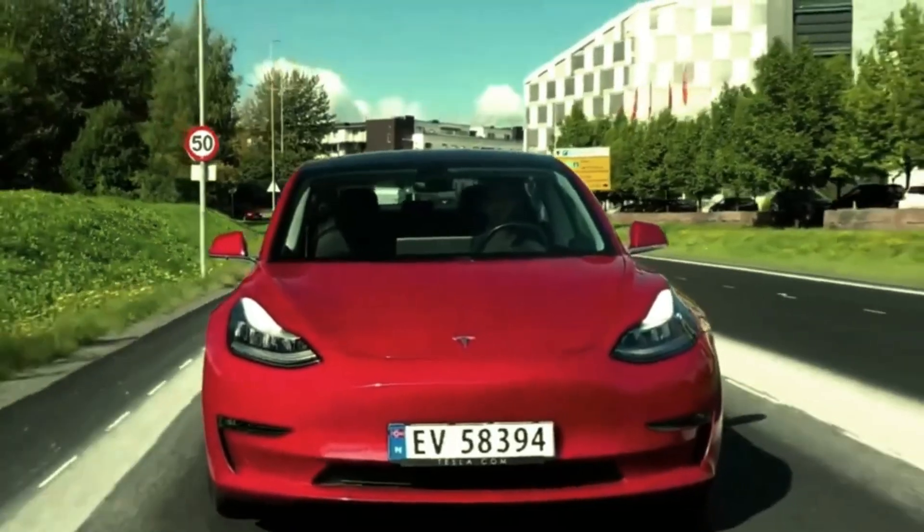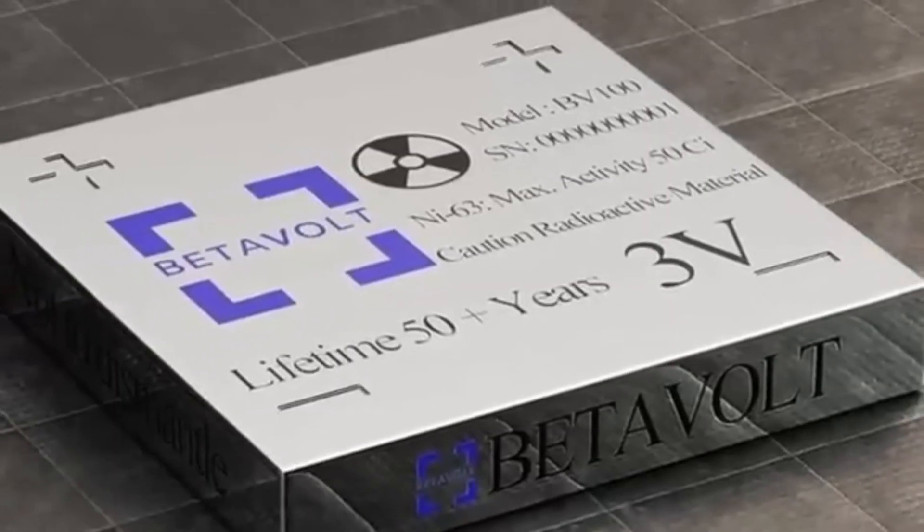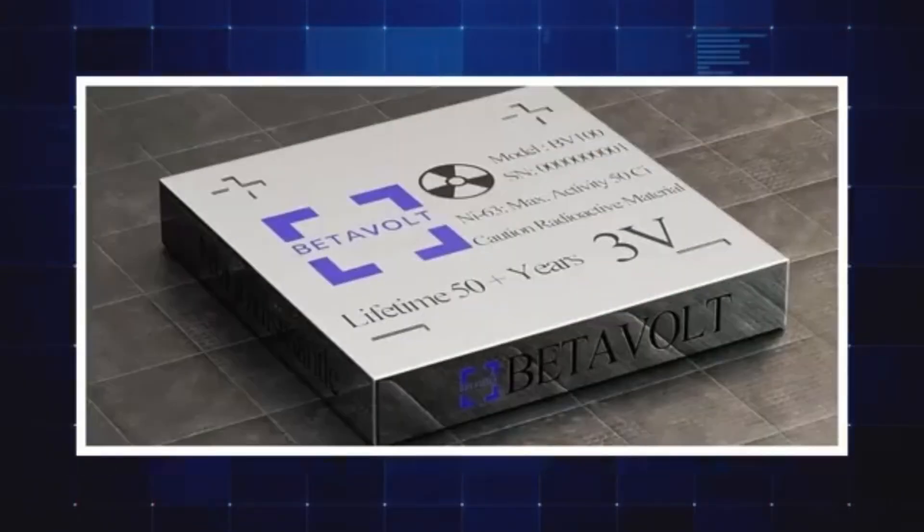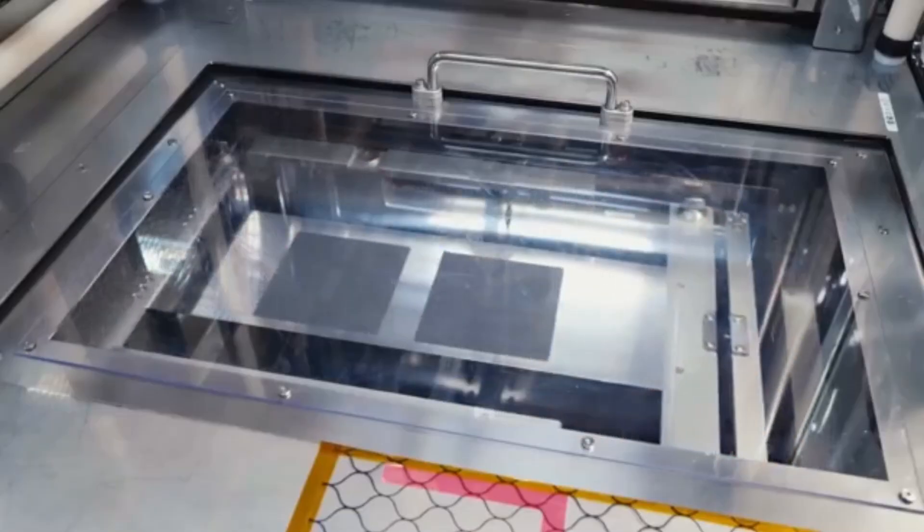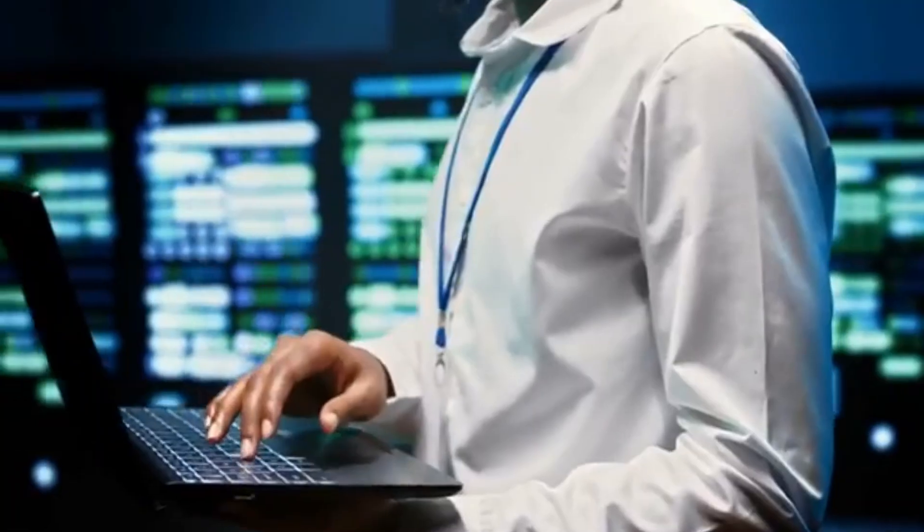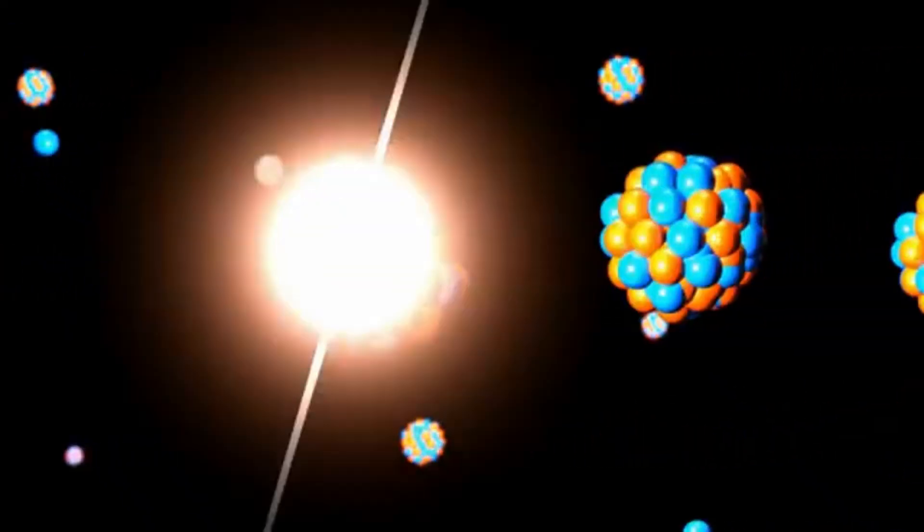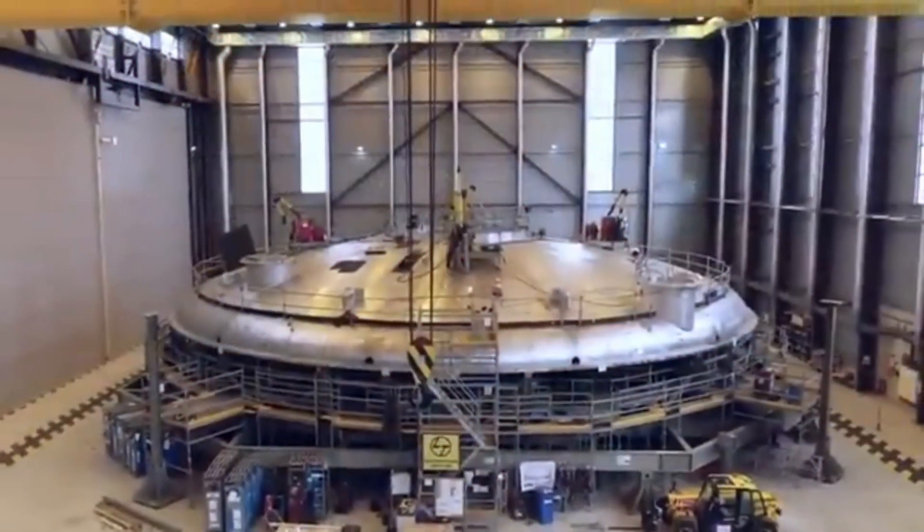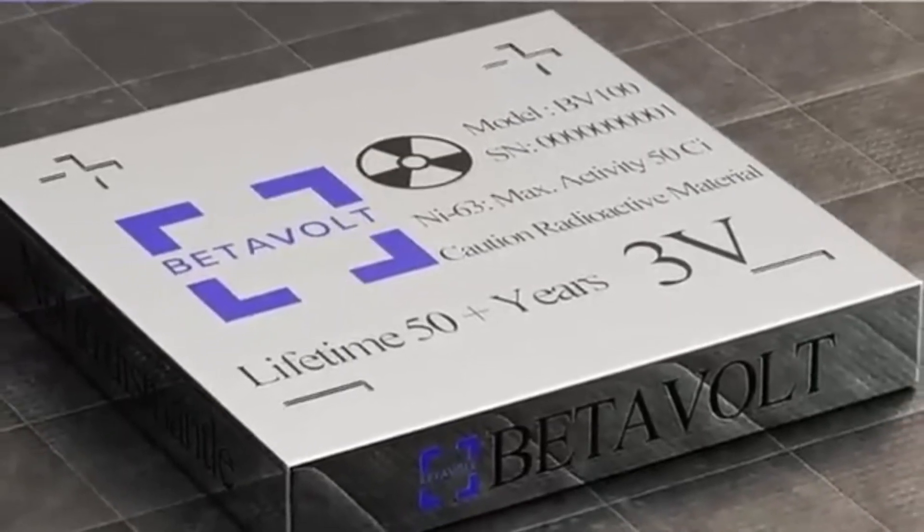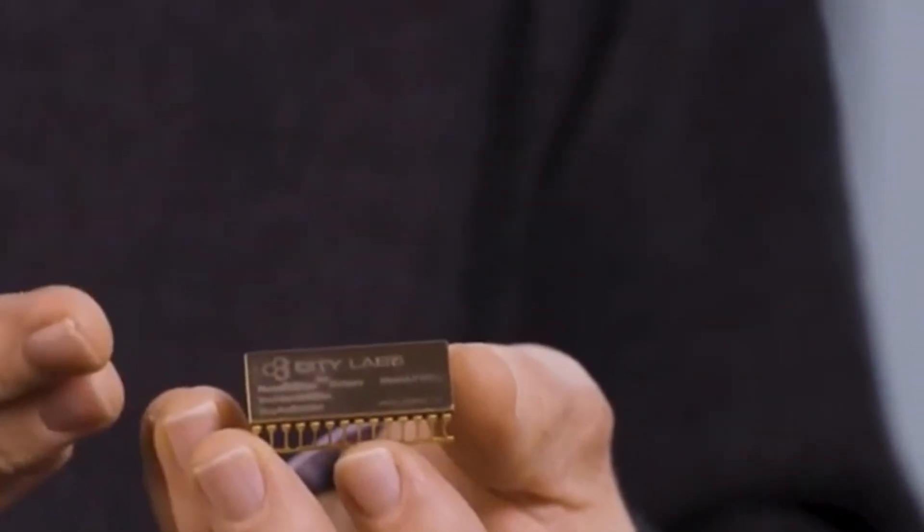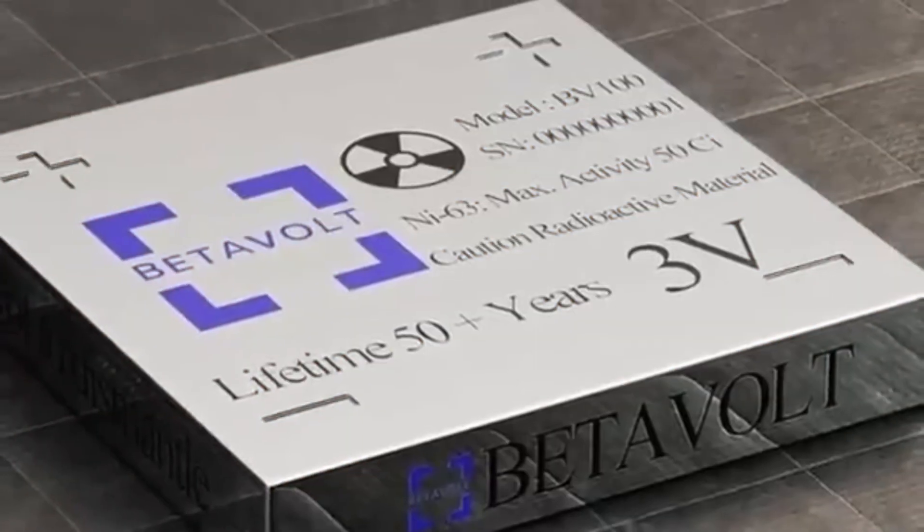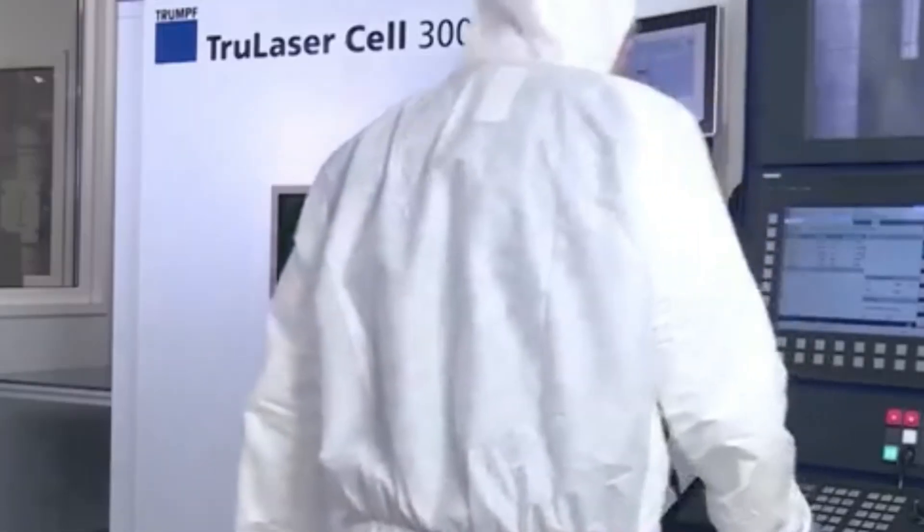The environmental impact of the BV-100 is significantly lower than that of conventional batteries. Nuclear batteries produce no emissions during their operation, making them a cleaner alternative. Furthermore, their long lifespan means fewer batteries need to be produced and disposed of over time, reducing electronic waste. The BV-100's use of nickel-63, which eventually decays into stable copper, presents fewer environmental hazards. As industries seek more sustainable energy solutions, the BV-100 offers a promising, eco-friendly option.